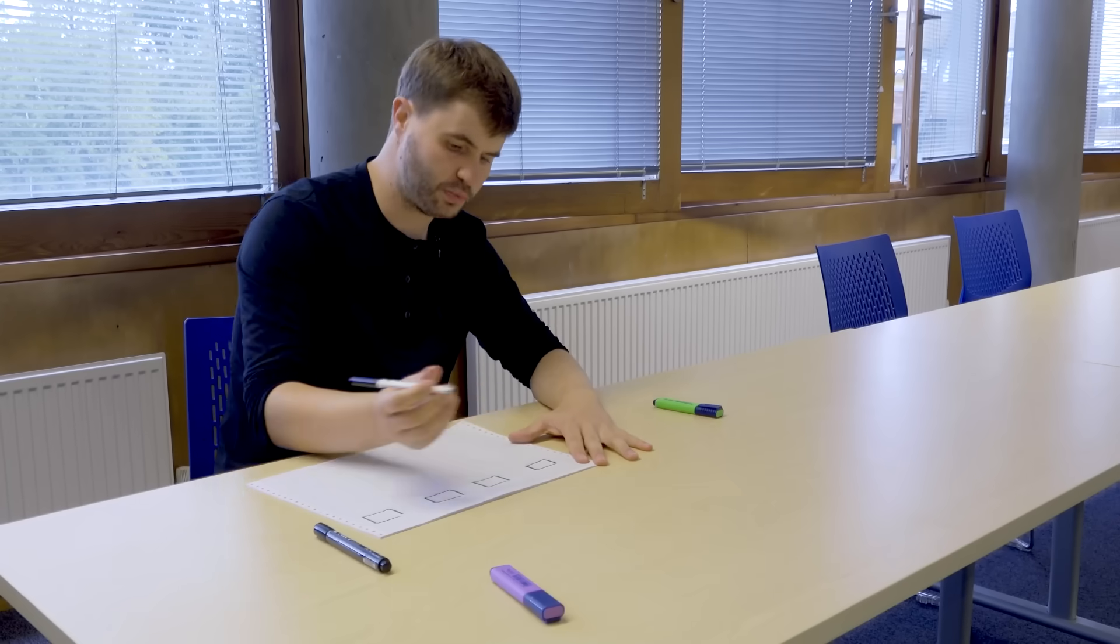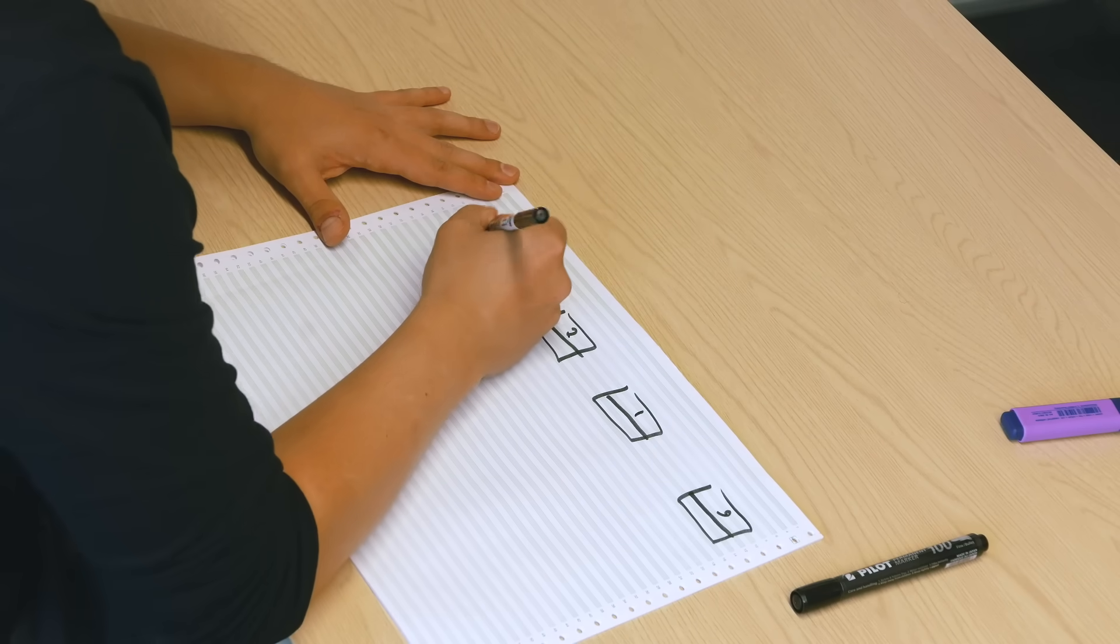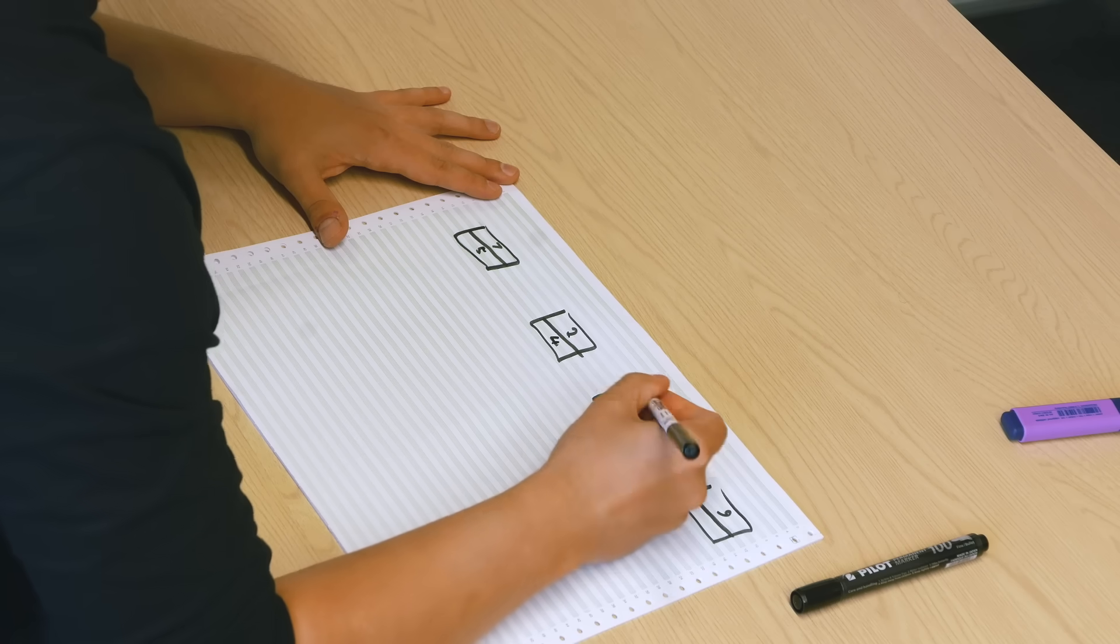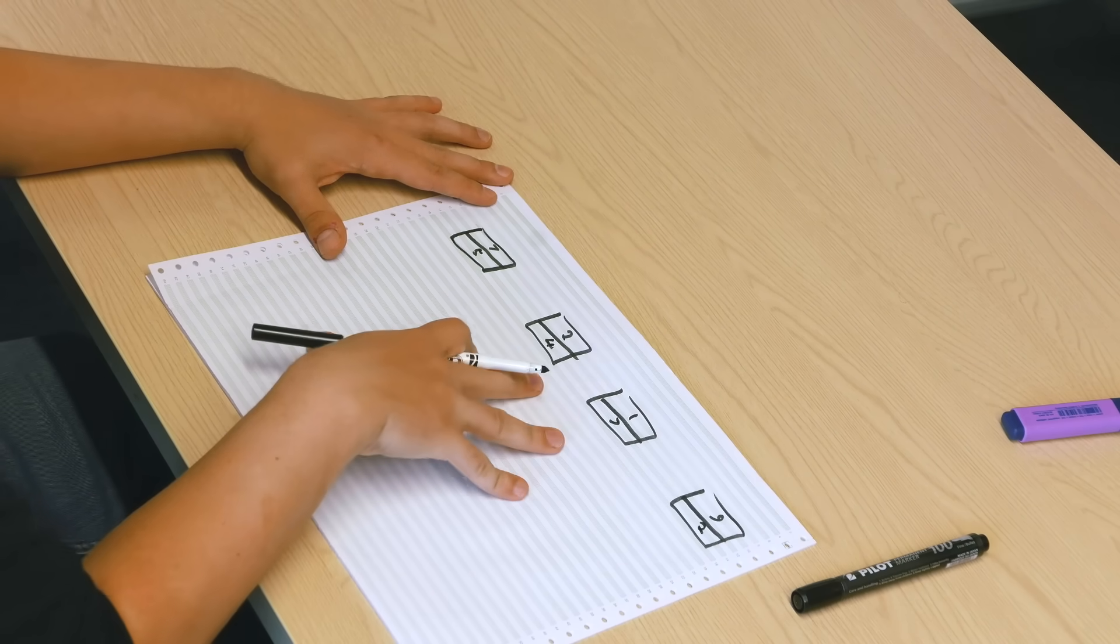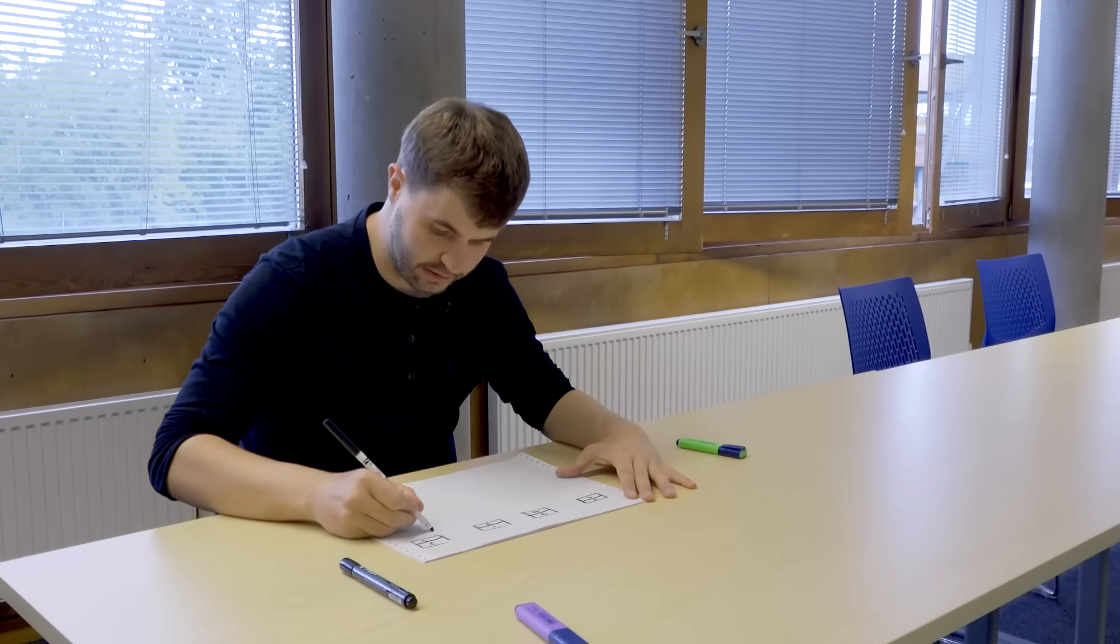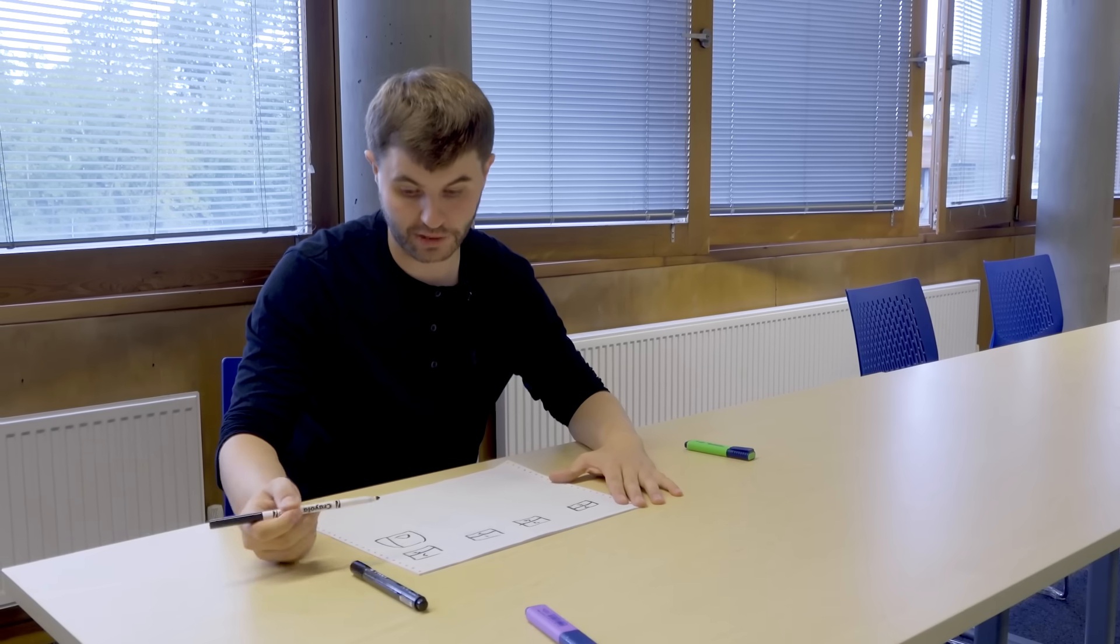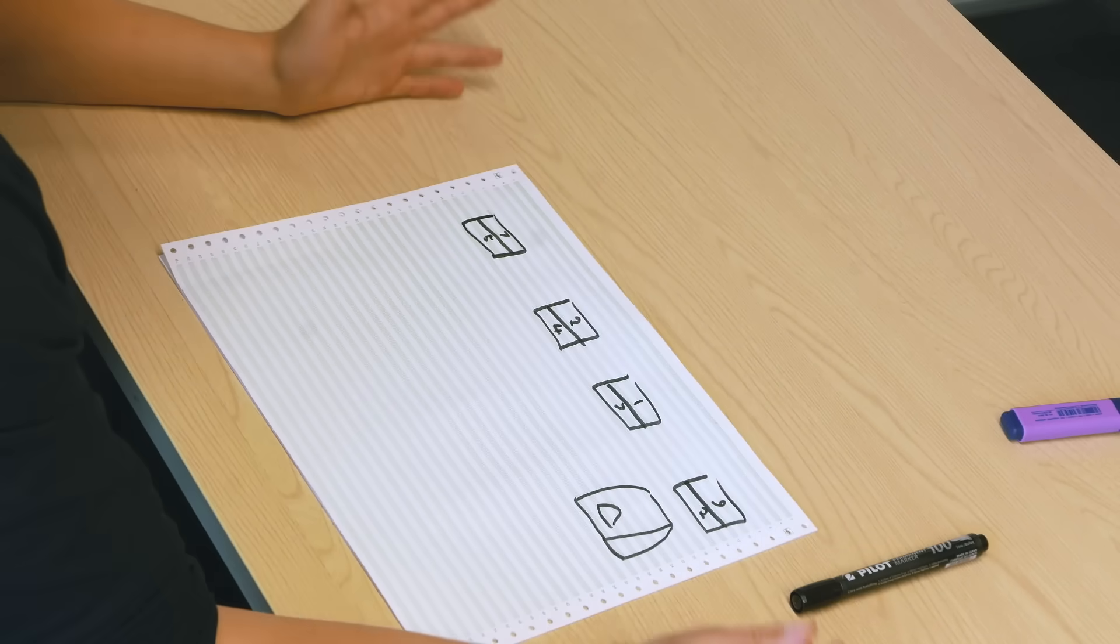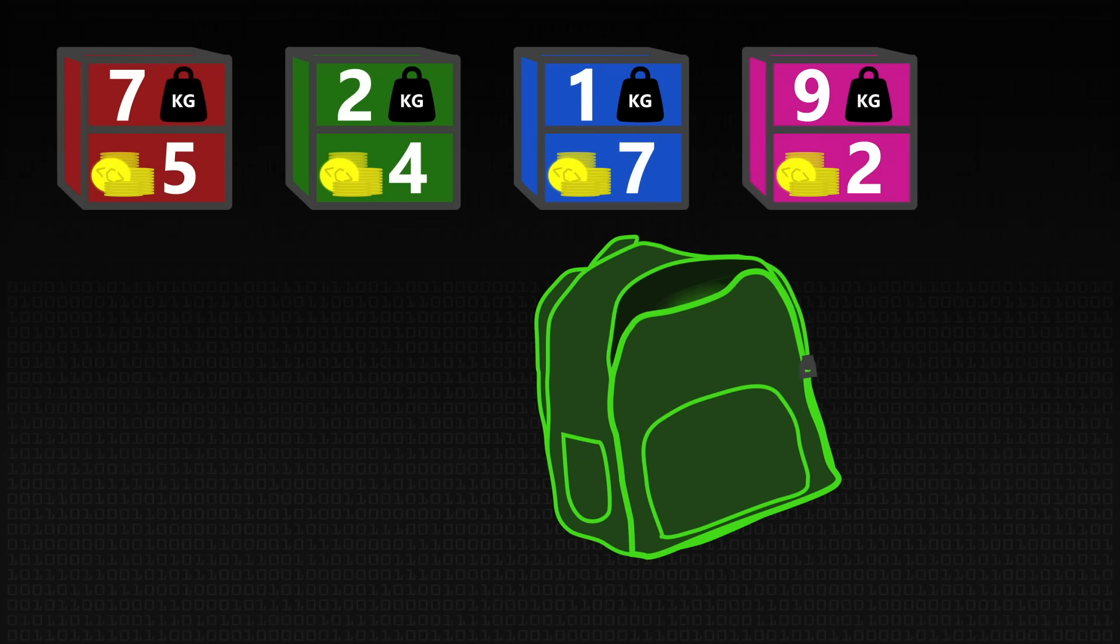We need to do a simple version of an abstract problem just because it's easy to understand. We're going to have four boxes and each one has a weight and then we'll write the values below it. So if we do 5, 4, 7, 2. These are our four boxes and we've got a bergen here and the goal is to put the maximum value of boxes in this bergen without going over a weight limit. We're going to impose a limit of 15 kilograms. So what we put into the bergen or the knapsack has got to be less than 15.